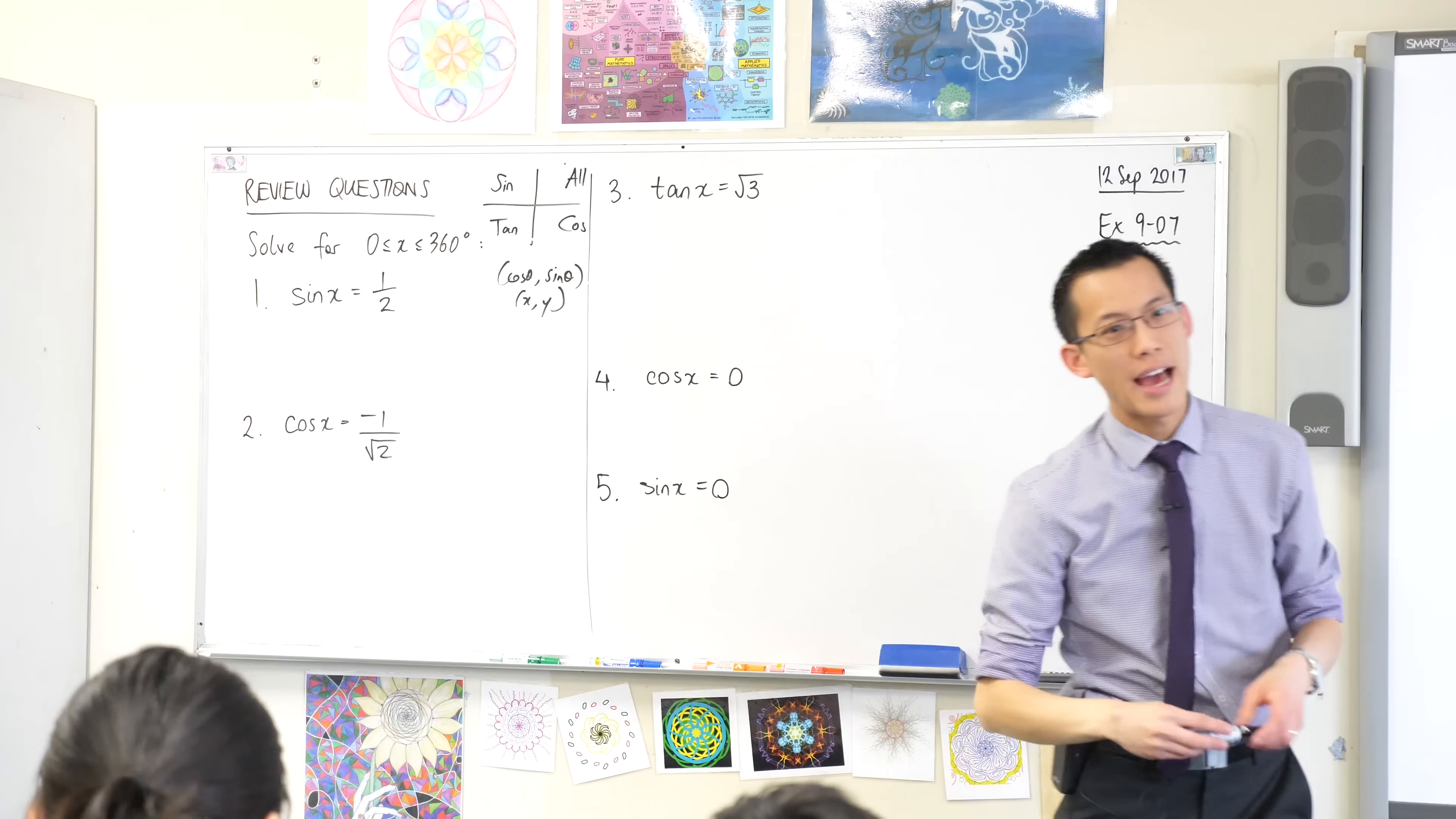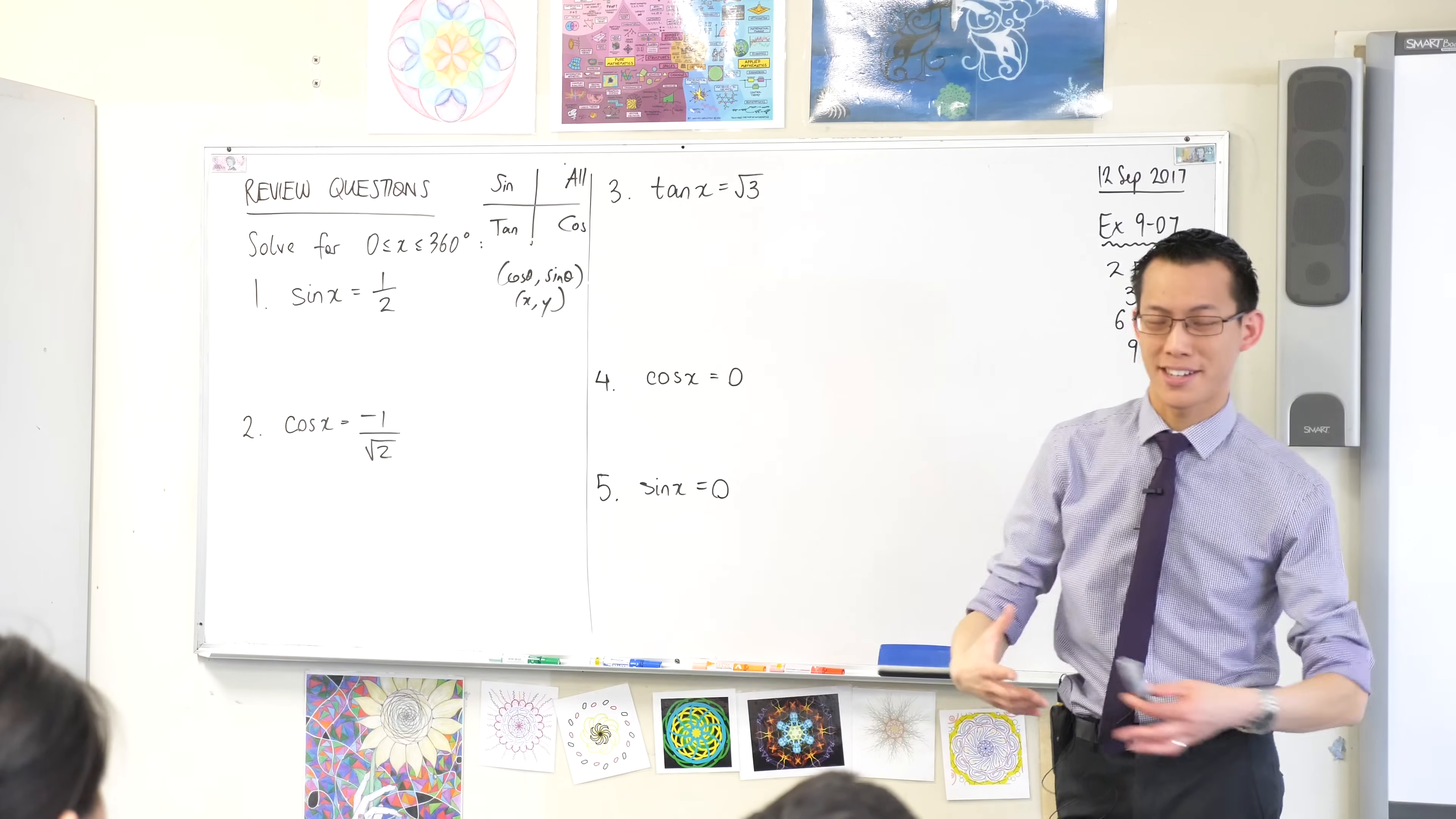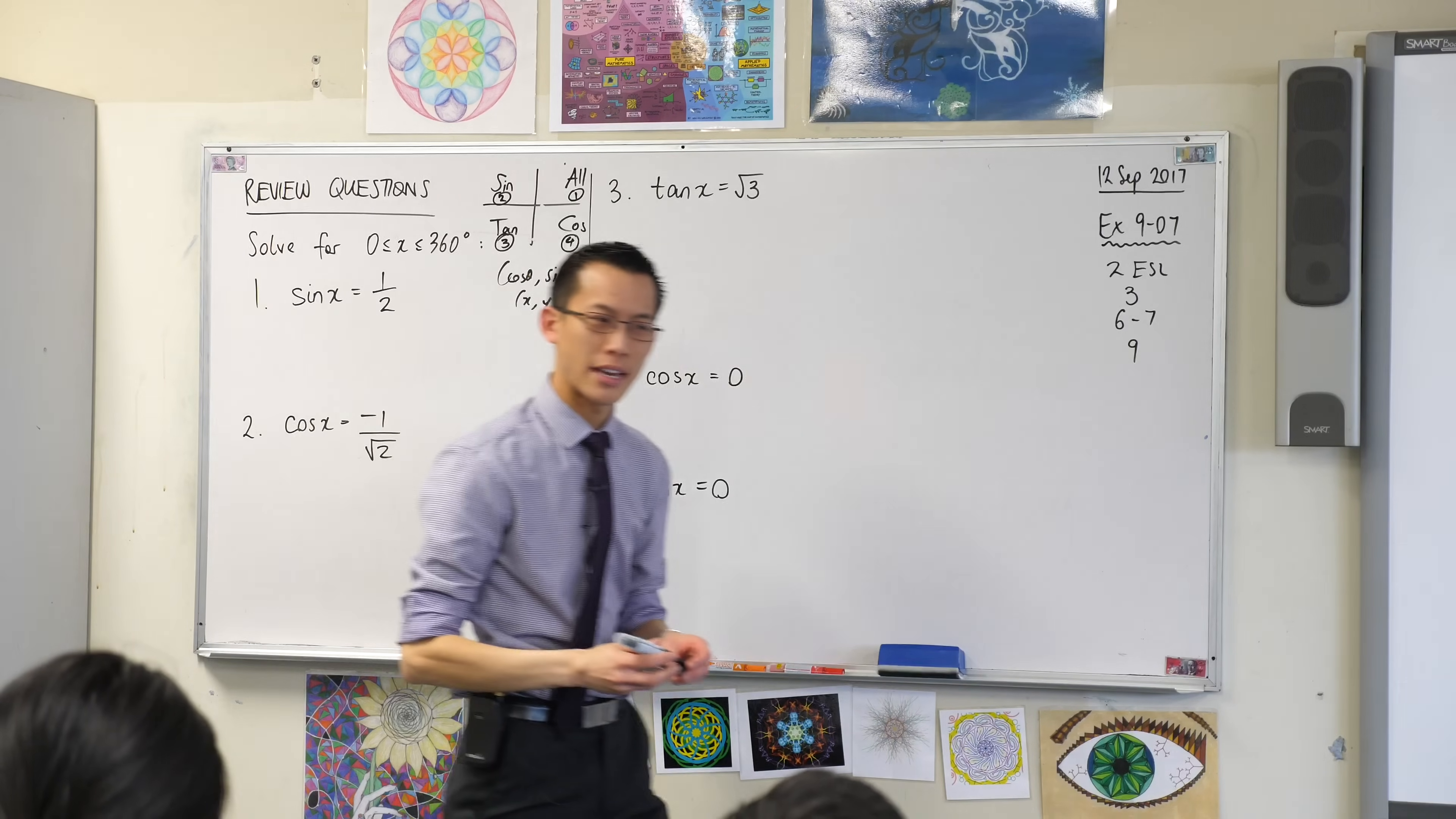Lastly, you tell me, look at the diagram, where is tan going to be positive? Which quadrants? The top right, oops calculator, top right and the bottom left. So it starts to get a little bit cumbersome to call them top right, bottom left, top left, etc. So we just number them. We call this the first quadrant, the second quadrant, the third and the fourth, okay?